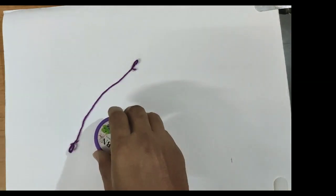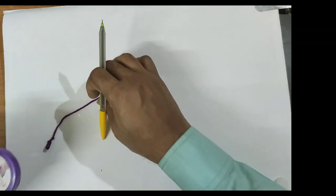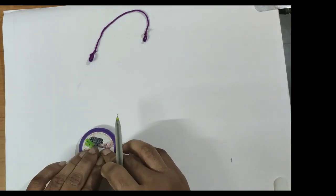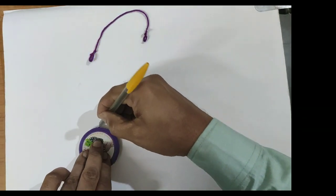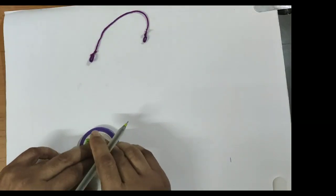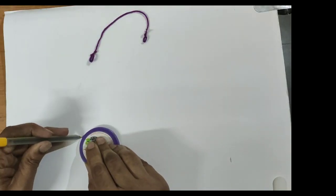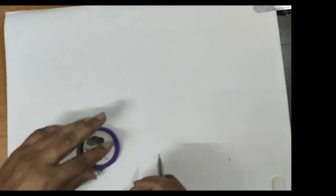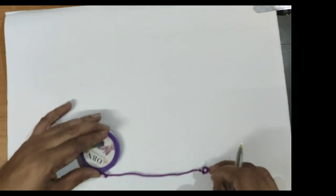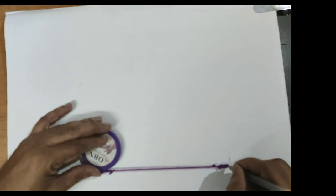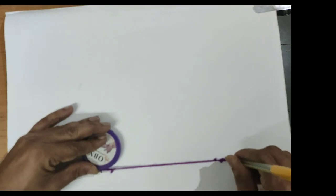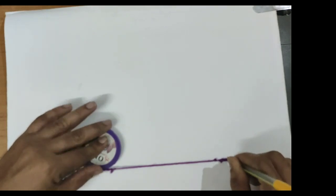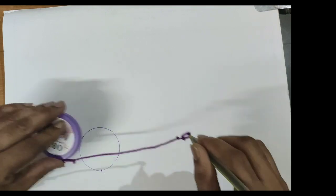Now let us draw this circle first. The initial length, free length available with us, will be equal to length of the circumference. Now let us fix one end of the thread here and the other end will be here. Now let us join these two points. This length will be equal to length of circumference.